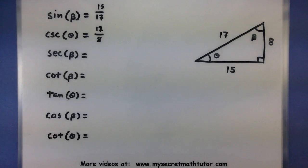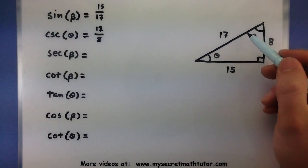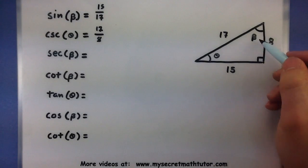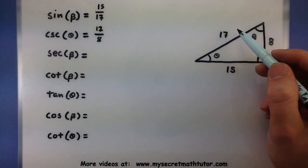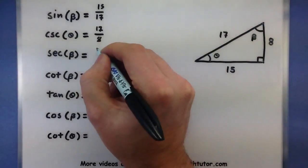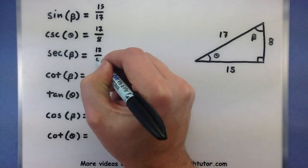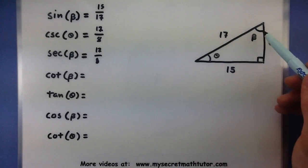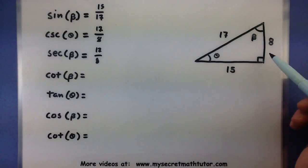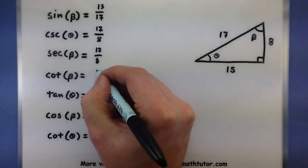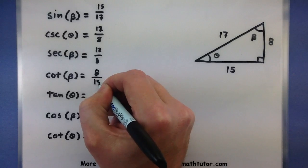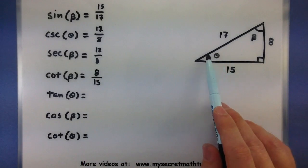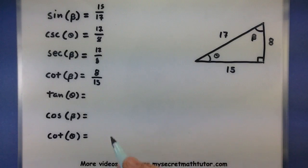Secant of beta. Well, secant is equal to the hypotenuse over the adjacent. And I'm talking about beta here, so here's the hypotenuse, there's the adjacent, 17 eighths. Cotangent of beta. So, thinking of beta, that's adjacent over opposite. Tangent of theta, so thinking about this angle, opposite over adjacent.